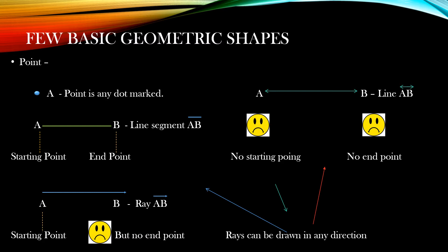Now what will happen if I extend it towards B? That is ray AB, which has a definite starting point but no end point. It is extending towards point B, so it is written as ray AB. We write A first because A is the starting point, and then the next letter is where the ray is getting extended. Rays can be in any direction — as you can see, there are three rays in dark blue, light blue, and red color.